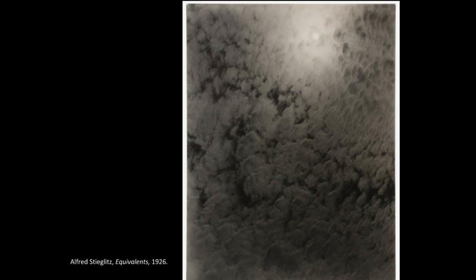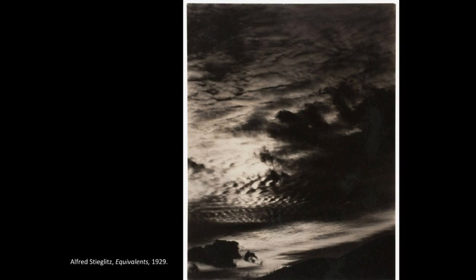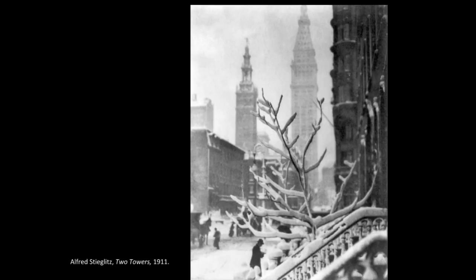A counterpoint to the Equivalents: Stieglitz emphasized pure abstraction adhering to modern ideas of equivalence, holding that abstract forms, lines, and colors could represent corresponding inner states, emotions, and ideas. You could look at this counterpoint when viewing the Equivalents series and ask: is it really posing that corresponding inner state within a modern era? Here are more of Alfred Stieglitz's Equivalents from 1929 and 1931. And this is Two Towers from 1911, bringing it back to that earlier work.